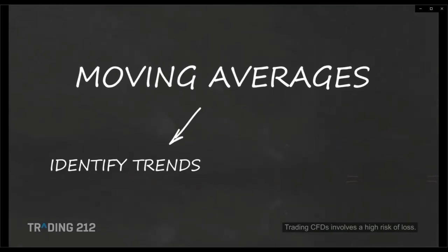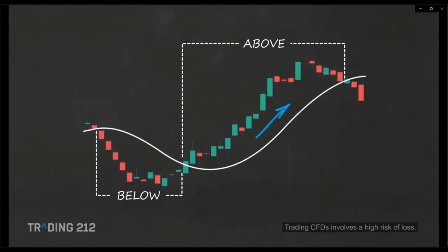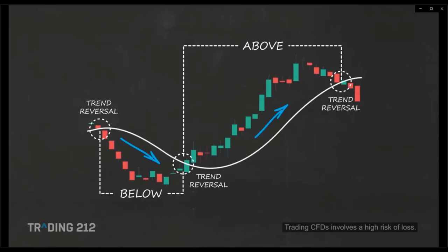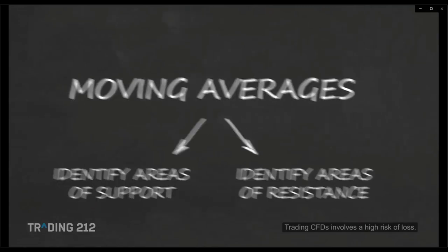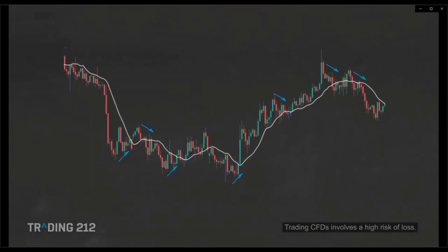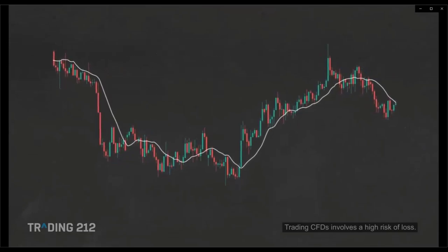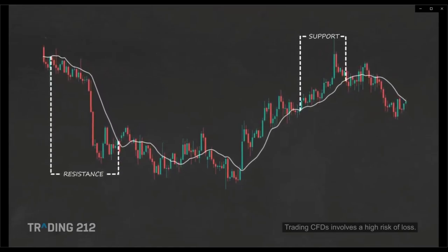Moving averages are used to identify trends and confirm reversals. When the price is above the moving average line, the instrument is considered to be in an uptrend; if below, it's in a downtrend. Breaking the moving average line usually implies a trend reversal. Moving averages also identify areas of support and resistance — traders check whether price bounces back from or breaks through the moving average line.